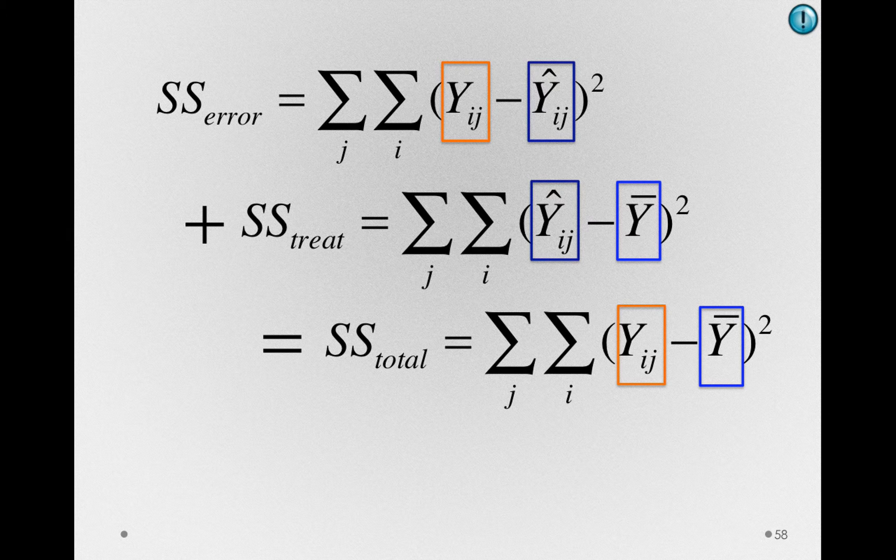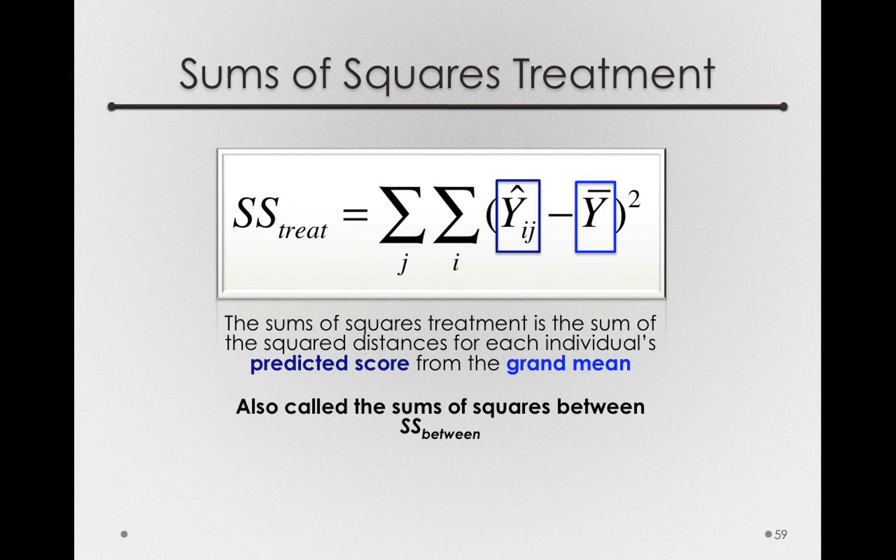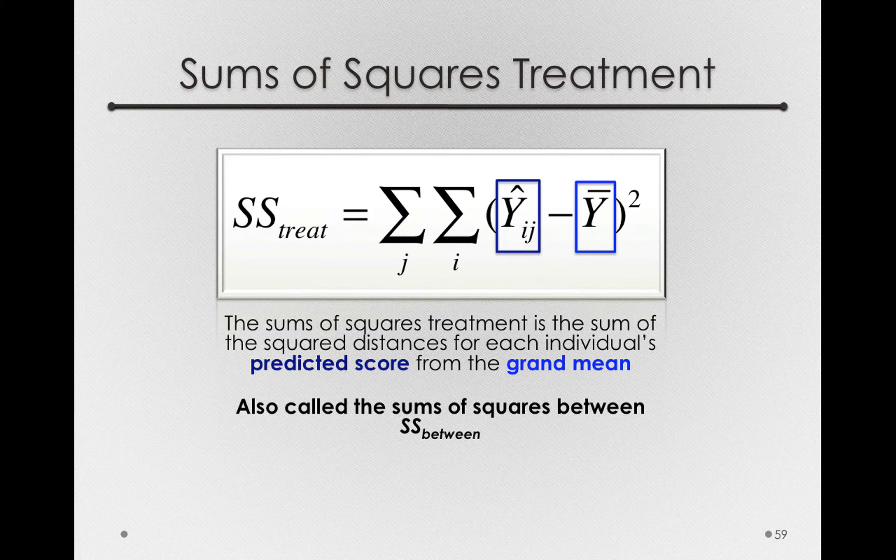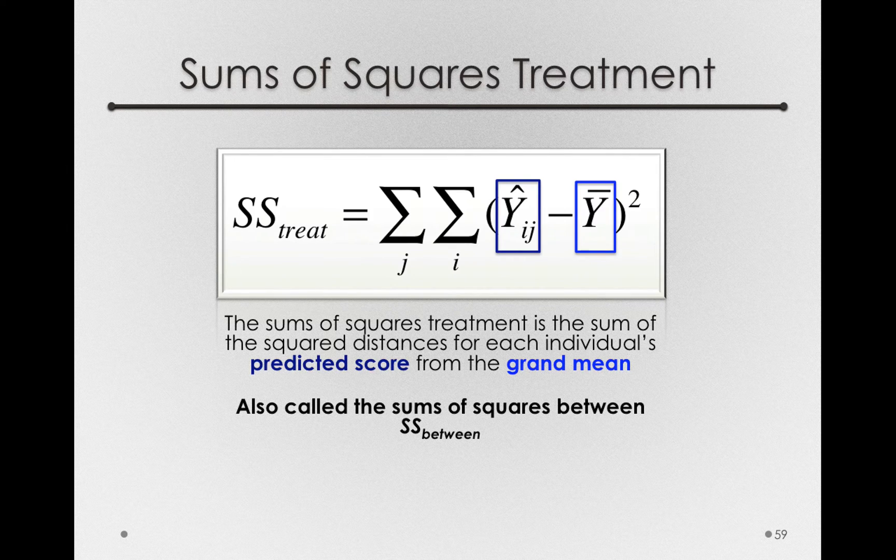Let's take a look at the sums of squares for treatment in a little more detail. Now the sums of squares for treatment is the sum for all individuals in every group of the predicted scores minus the grand mean.